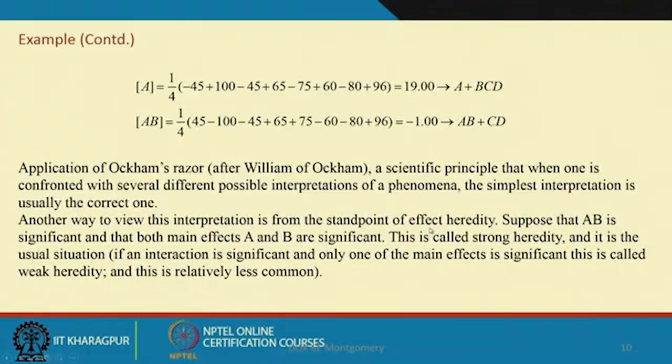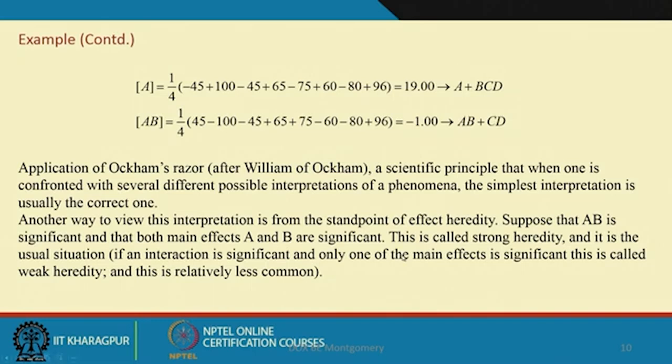Another viewpoint is effect heredity. Suppose AB is significant and both main effects A and B are also significant — that is strong heredity: A and B are significant and AB is also significant. Another case is: AB is significant but one of A or B is not significant — that is weak heredity, which is less common. These two principles — Occam's Razor and effect heredity — help us focus on the correct effects when they are estimated using the alias structure.